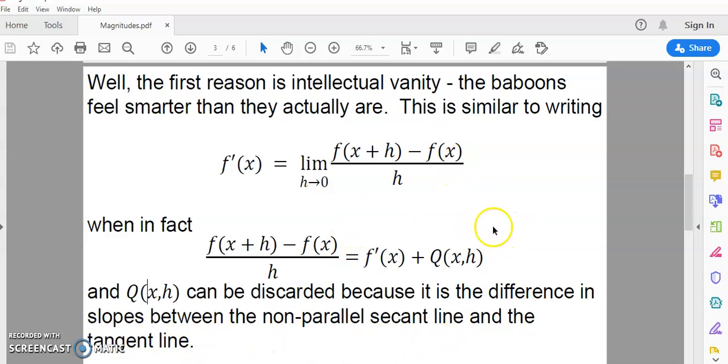And, you know what? You don't need anything past high school algebra to understand that this is true. And that's really all you need to know. q(x,h) is a function which determines the difference in slopes. And I've written an article on this, and you can find it. And I will place a link in the details section of this video.